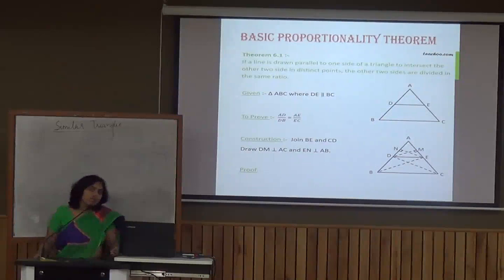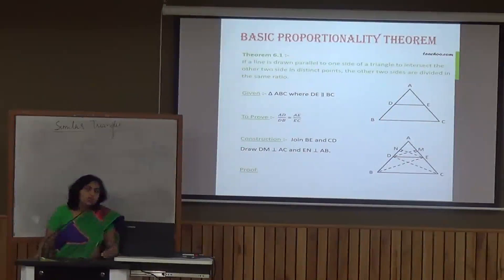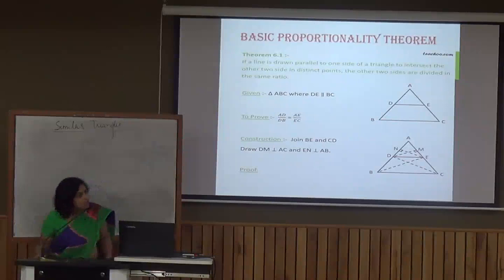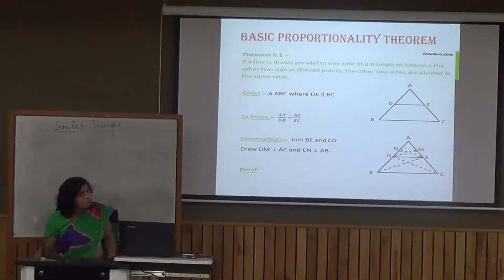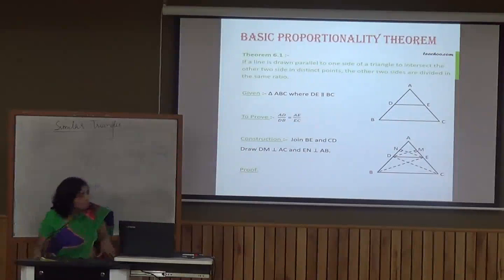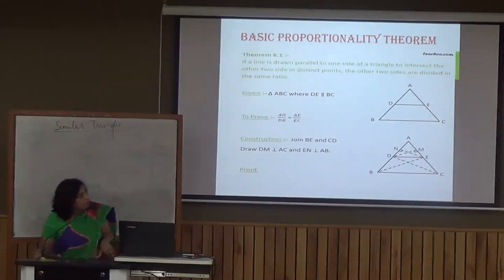Students, as we know, we have a particular format or structure for a theorem. The first point is 'Given': triangle ABC where DE is parallel to BC, which you can see in the figure. The figure is another part of the theorem's structure. Then what we have to prove: AD/DB = AE/EC.